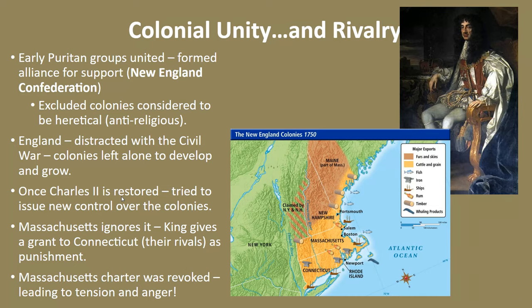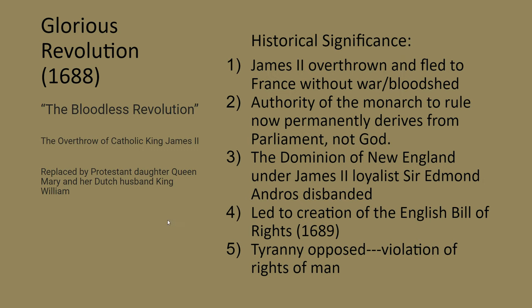After Parliament ran England for about 10 years — largely into the ground — a group of English nobles traveled to France to beg Charles II to return to the throne. Oliver Cromwell was removed from power and Charles II was restored to the throne — this is called the Restoration. Charles II tried to exert new control over the colonies, giving away land to nobles who helped restore him; 'Carolina' is Latin for Charles. Eventually James II came to power and ushered in another critical event in American colonial history: the Glorious Revolution.